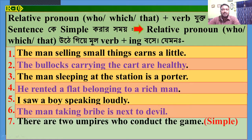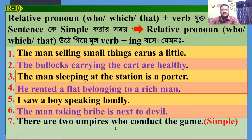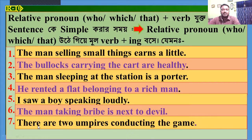Number 7: 'There are two umpires who conduct the game.' Make it simple. Dear students, here 'who' is the relative pronoun and 'conduct' is the principal part. So, the answer will be: 'There are two umpires conducting the game.'